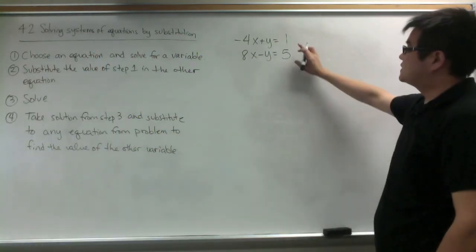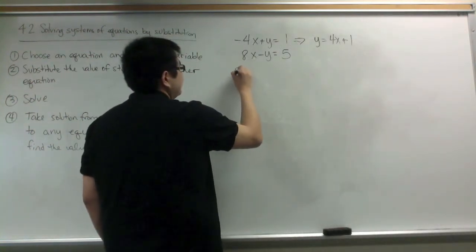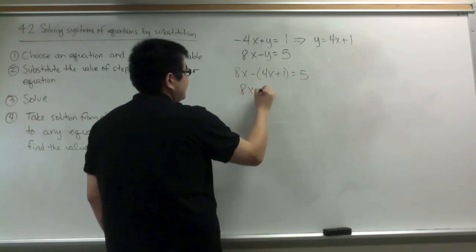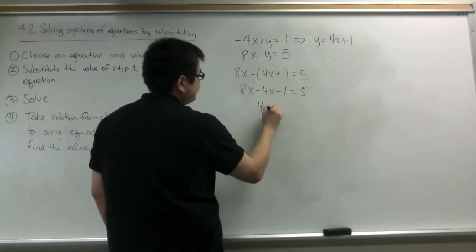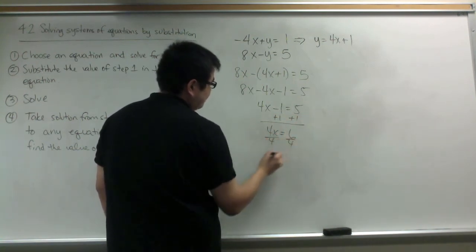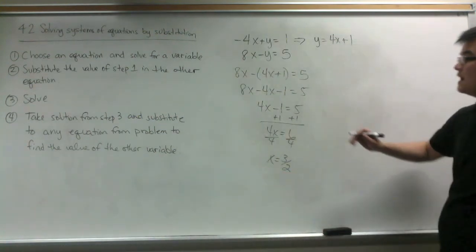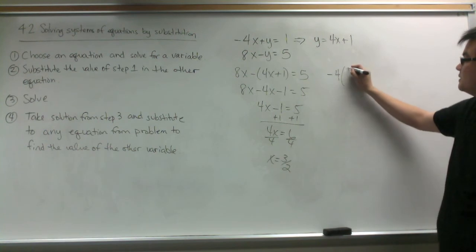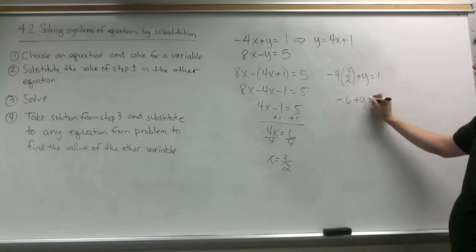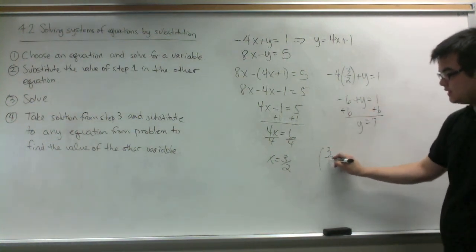In our next system of equations, I'm going to solve for y for the top equation: y equals 4x plus 1. I'm going to substitute that into the second equation: 8x minus (4x plus 1) equals 5. Distribute the negative sign, combine like terms, add 1 to both sides — 4x equals 6. Divide both sides by 4 — x equals 3 halves. I'm going to substitute x equals 3 halves into the top equation: negative 4 times 3 halves plus y equals 1. Negative 4 times 3 halves is negative 6. Add 6 on both sides — y equals 7. So the solution is (3/2, 7).